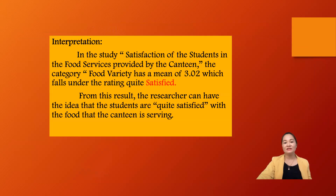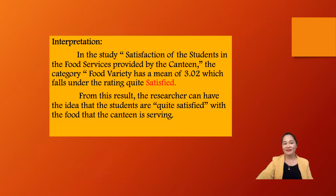In the study on students' satisfaction with food services provided by the canteen, food variety has a mean of 3.02 which falls under the rating of Satisfied or quite satisfied. From this result, the researcher can conclude that students are quite satisfied with the food that the canteen is serving. That's all for the mean and the weighted mean under measures of central tendency.